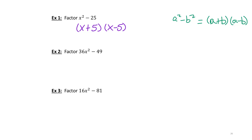For 36x² − 49: the square root of x² is x, and the square root of 36 is 6, so we have 6x. The square root of 49 is 7. So this factors to (6x + 7)(6x − 7). I'll let you do the last one and check your answers using the annotated notes posted in Blackboard.